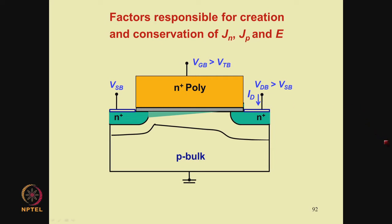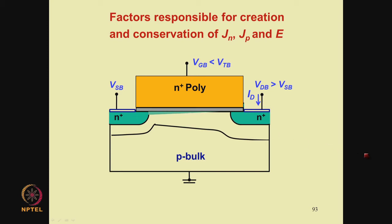On the other hand, if you go to the subthreshold region where VGB is less than VTB, the inversion charge is very small. Therefore the drift current, which is proportional to this charge, is drastically cut down. However, there is a charge gradient from source to drain, and therefore the diffusion current becomes more significant than the drift current. So in the subthreshold region, the mechanism of current is predominantly diffusion. In the superthreshold region, it is drift.